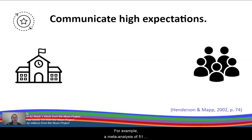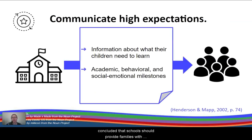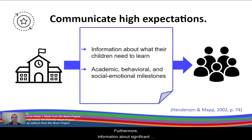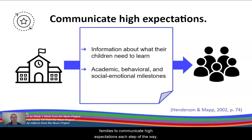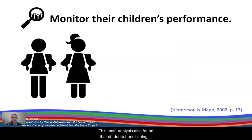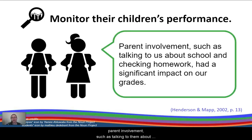A meta-analysis of 51 research studies on parent and community involvement concluded that schools should provide families with information about what their children need to learn. Furthermore, information about significant milestones in a child's academic, behavioral, and social-emotional journeys empowers families to communicate high expectations each step of the way. This meta-analysis also found that students transitioning from elementary school to middle school reported that parent involvement, such as talking to them about school and checking homework, had a significant impact on their grades.